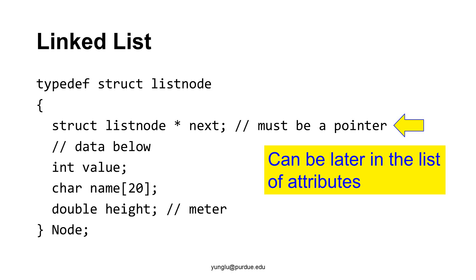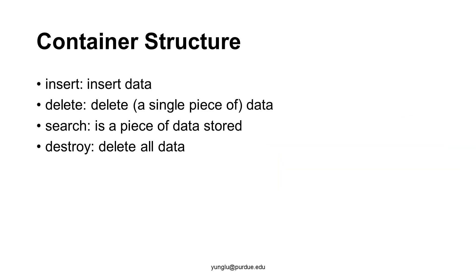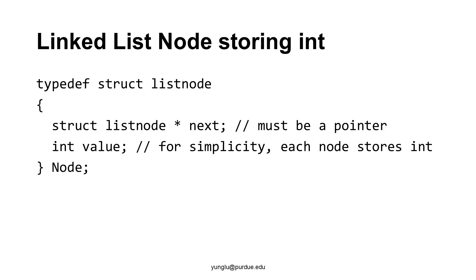As mentioned earlier, a linked list or a binary tree is a container structure. A container structure usually supports at least four types of operations: insert data, delete data, search whether a piece of data is stored, and destroy. Destroy deletes everything. Let's use a simple linked list. This structure has only two attributes: a pointer and an integer. In the rest of this lecture, we will study three functions.